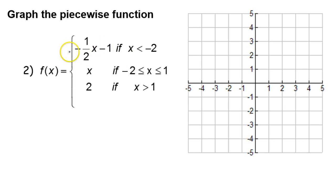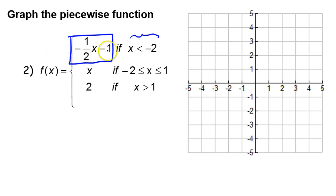One way to graph a piecewise function is to graph the whole function lightly and then use the domain to limit it to the part where that function applies. For the first piece, I'm looking at y equals negative one-half x minus one — a linear function in slope-intercept form. The y-intercept is negative one, and the slope of negative one-half means I go down one and over two.